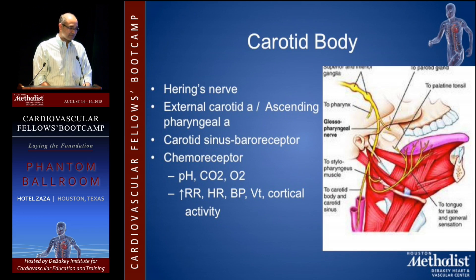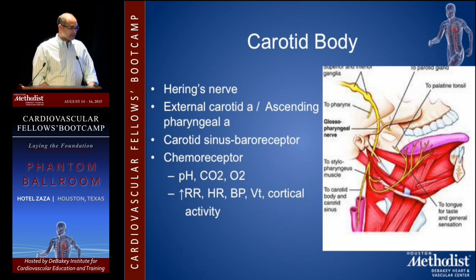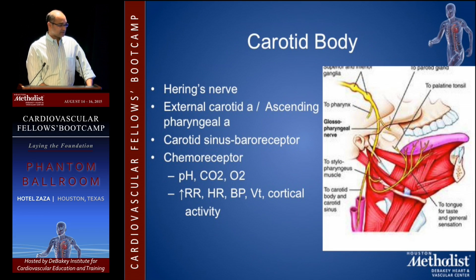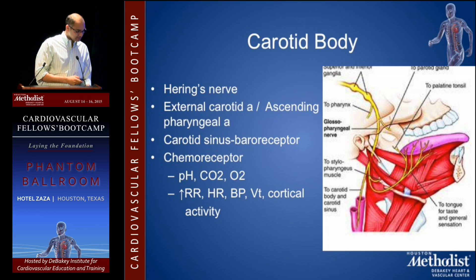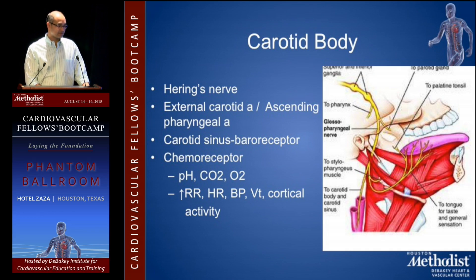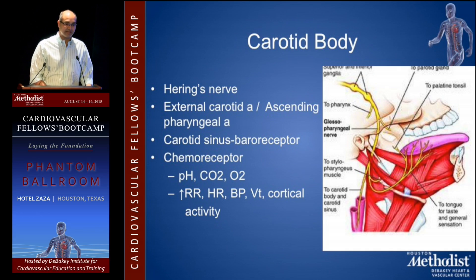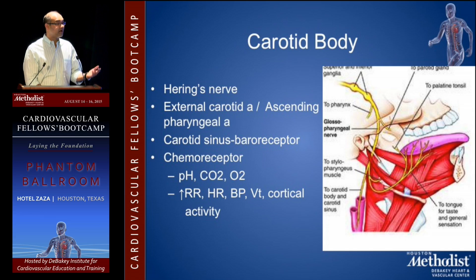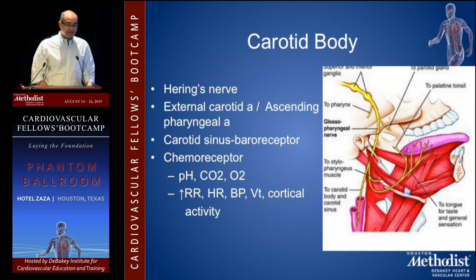The carotid body is supplied by a nerve called Hering's nerve, which comes from the glossopharyngeal nerve. Importantly, it is supplied by the ascending pharyngeal artery, which comes off the external carotid artery. This is important to know because preoperative embolization, if needed, has to be targeted through the external carotid, not the internal.